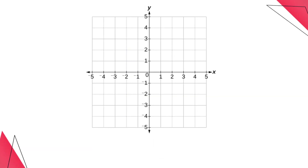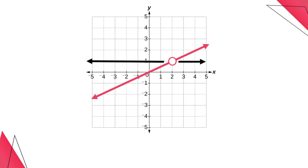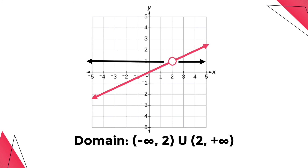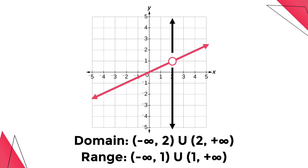For example 2, for the domain, the graph extends infinity to the left and right of positive 2 but not including 2. This is represented by this interval notation. Take note that we will use parentheses to indicate that 2 is not part of the graph. For the range, the graph extends infinity upward and downward of positive 1 but not including 1. This is represented by this interval notation. We will use parentheses to indicate that 1 is not part of the graph.